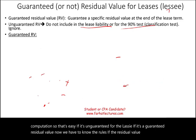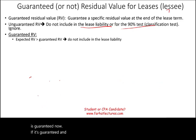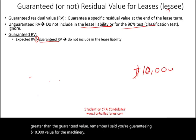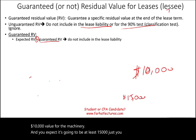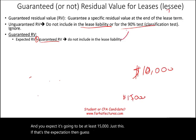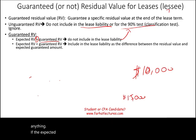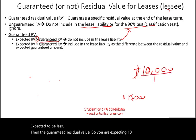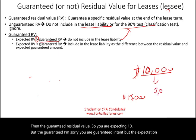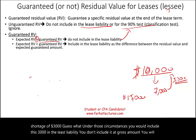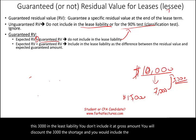If the residual value is guaranteed, we need to know two rules. First, if the expected residual value is greater than the guaranteed value — for example, you guaranteed ten thousand dollars but expect at least fifteen thousand — then you treat it as if it were unguaranteed and ignore it. Second, if the expected residual value is less than the guaranteed value — for example, you guaranteed ten thousand but expect only seven thousand — you have a shortage of three thousand. In that case, you include the discounted shortage in the lease liability.